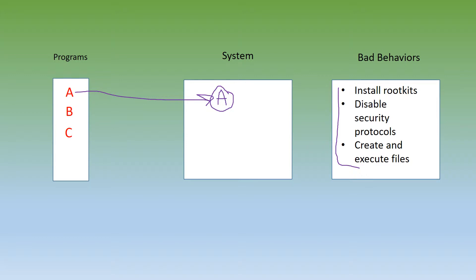For another example, let's say program B is non-malicious, so program B will enter the system. The system will watch and analyze program B run its code, but since program B is non-malicious, it won't have any of these bad behaviors. So program B will successfully run its code and it won't be labeled as malicious.